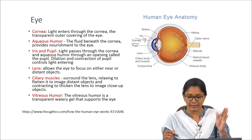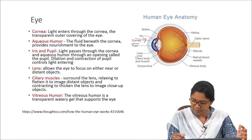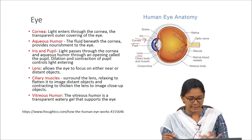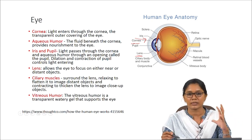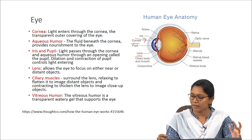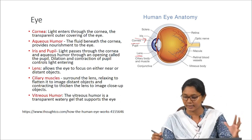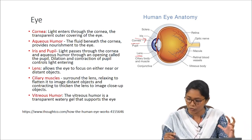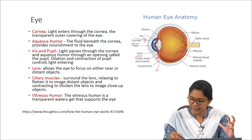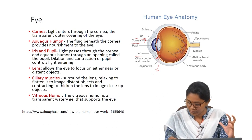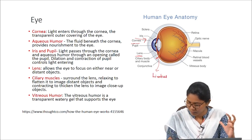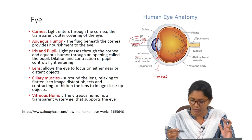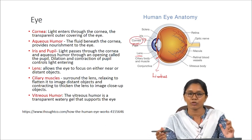Behind the pupil we have the lens, surrounded by the ciliary muscles. Then we have the vitreous humor, a transparent watery gel that supports the eye, and the optic nerve, which enters the eye and moves through ciliary nerves into the corneal layer via the sclera. There is a connection between the cornea and the sclera called the limbus, and this is where the nerves enter. Out of all this, we are going to study why a tissue engineering approach is necessary for corneal repair.